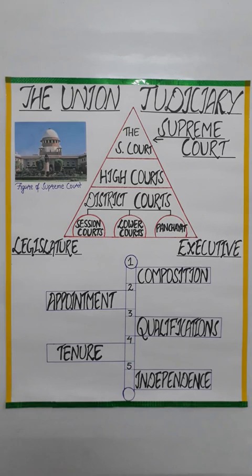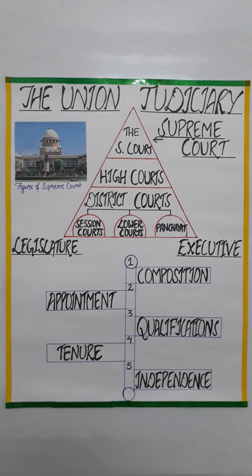Moving to its composition: in the beginning, the Supreme Court had a Chief Justice and seven other judges, so the total strength was eight. But now, at present, the strength of the Supreme Court judges is 34 — that is, one Chief Justice and 33 other judges. Remember, the Parliament may increase or decrease the number of judges of the Supreme Court as and when required. As we can see, the Parliament has passed laws and has raised the strength of the judges till date.